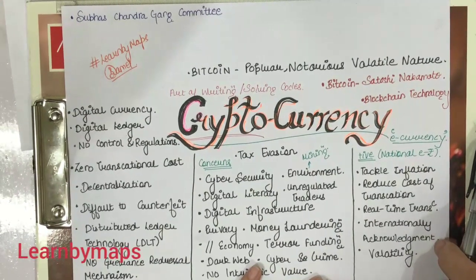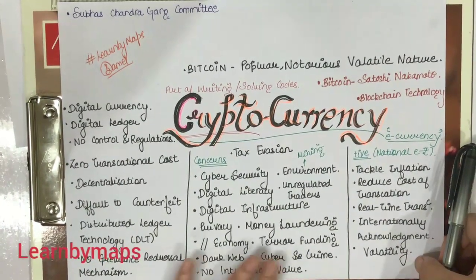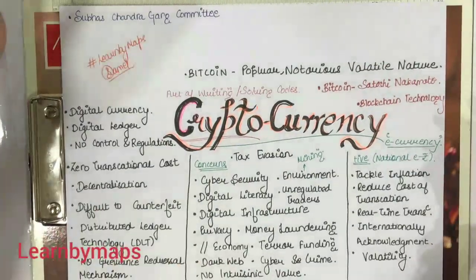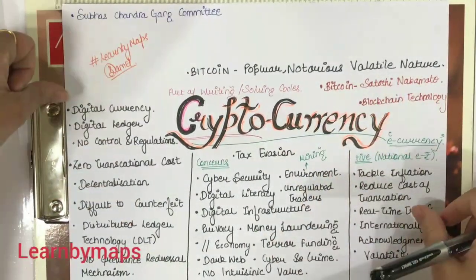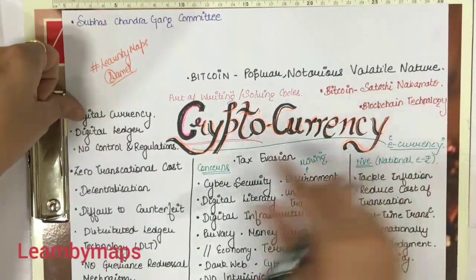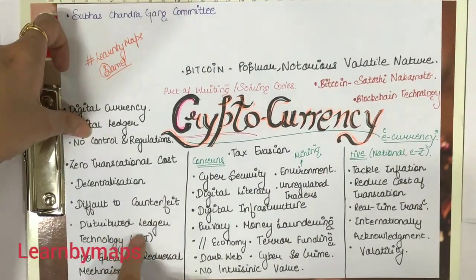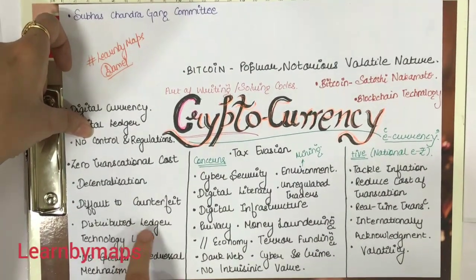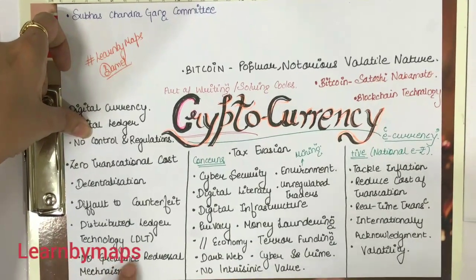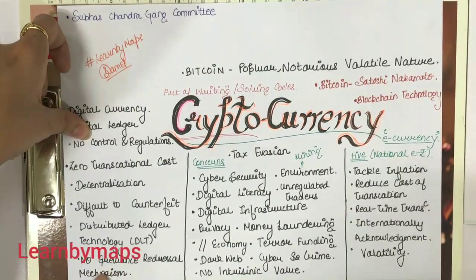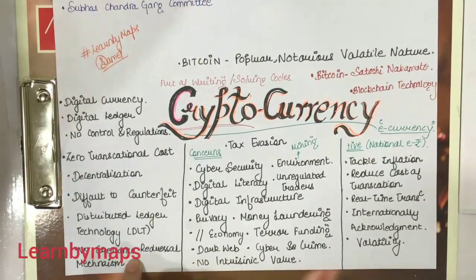Internationally there will be acknowledgement. There will not be a validity issue. There will not be fluctuations. This is all for cryptocurrency and you can see some other points here. This is your distributed ledger technology and no grievance or addressal mechanism — this is also one of the concerns of cryptocurrency.